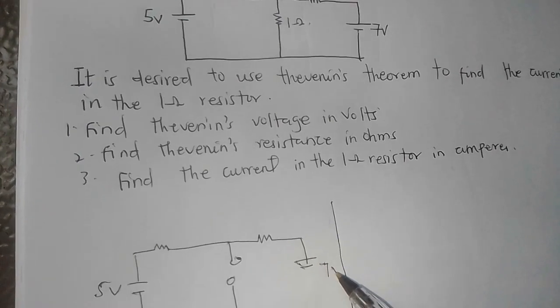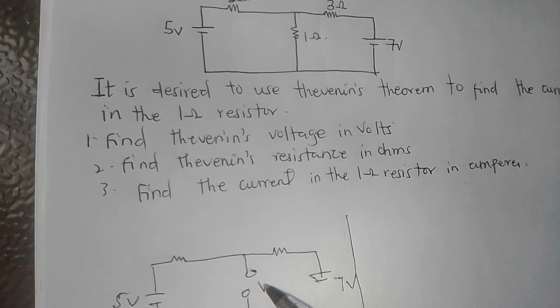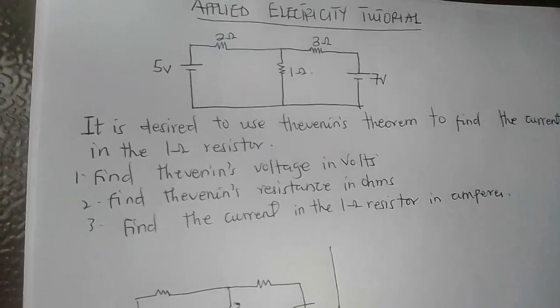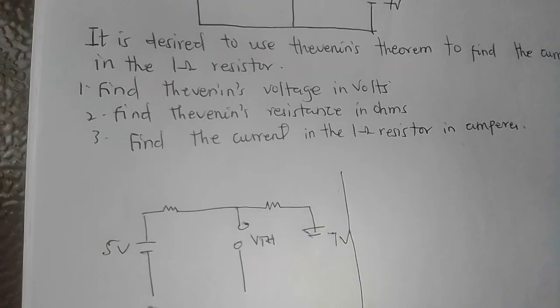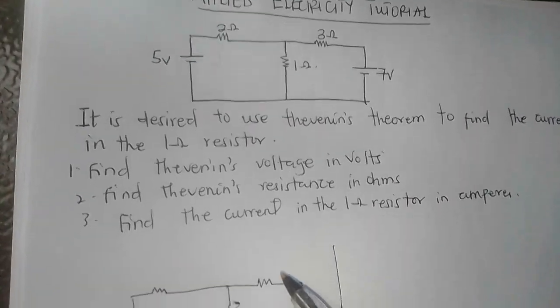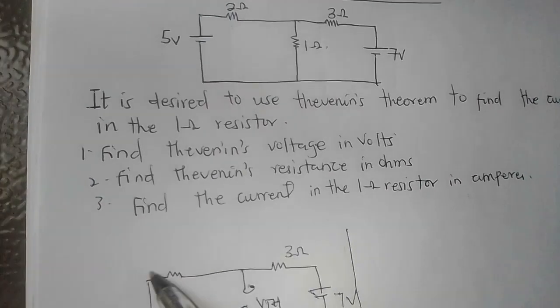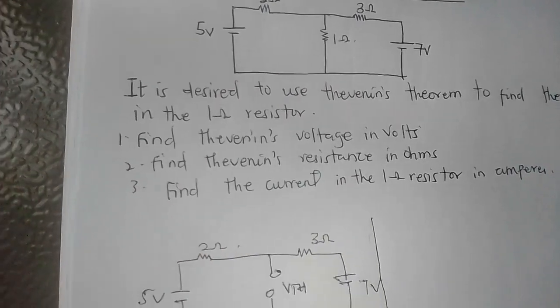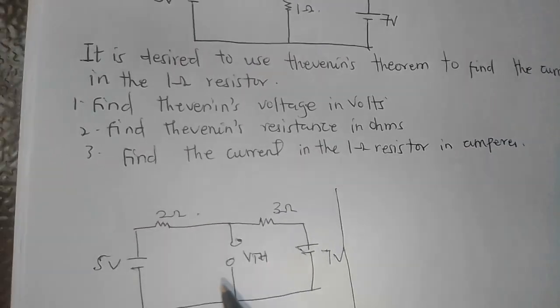Then you have VTH, that is Thevenin voltage, then you also complete the circuit here. So I have my 3 ohm here, I have my 2 ohm here. From this diagram, I want you to find my Thevenin voltage.